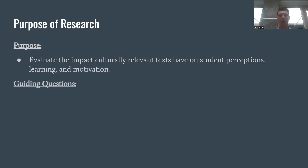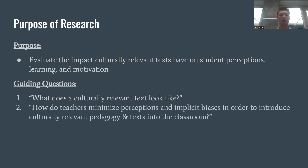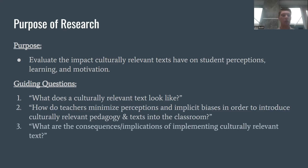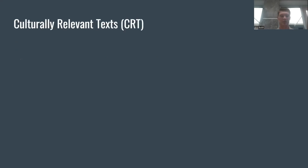We are going to achieve that purpose through three guiding questions: What do culturally relevant texts look like? How do teachers minimize perceptions and implicit biases in order to introduce culturally relevant pedagogy and texts into the classroom? And lastly, what are the consequences and implications of implementing culturally relevant texts?